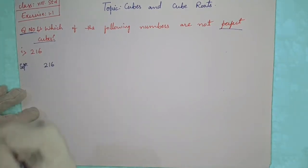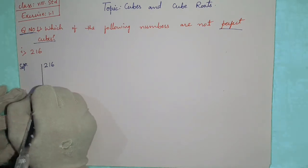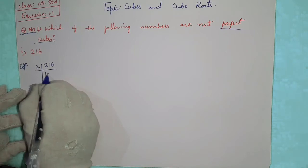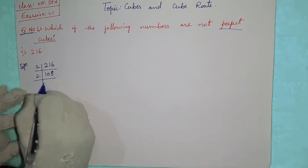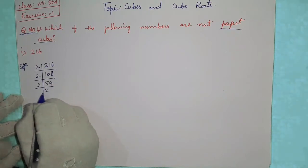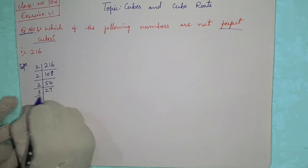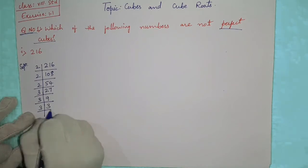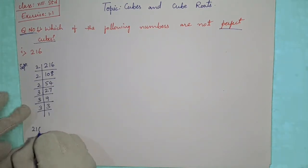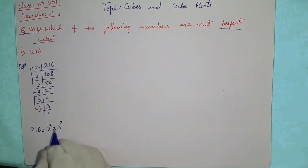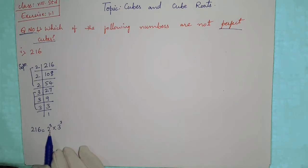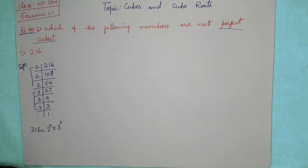The first number is 216. It is an even number, so we start prime factorization by dividing by 2. Continuing the division, we get 216 equals 2 raised to 3 into 3 raised to 3. Since all powers are 3, it is a perfect cube. Since 2 threes are 6, we know 216 is the cube of 6.